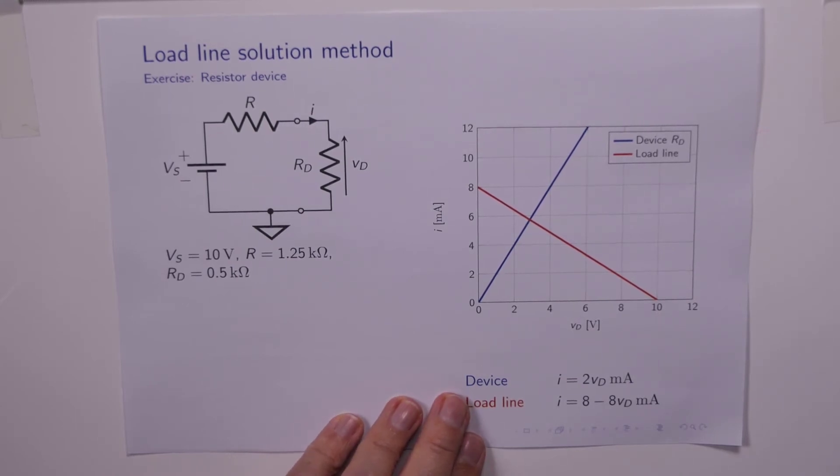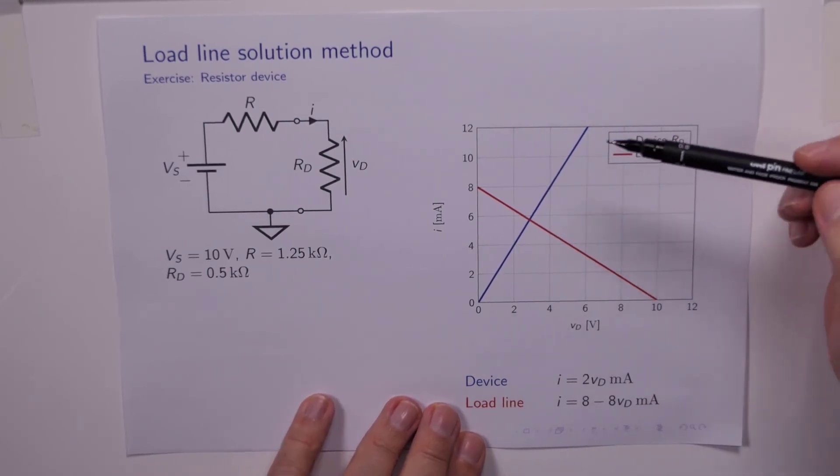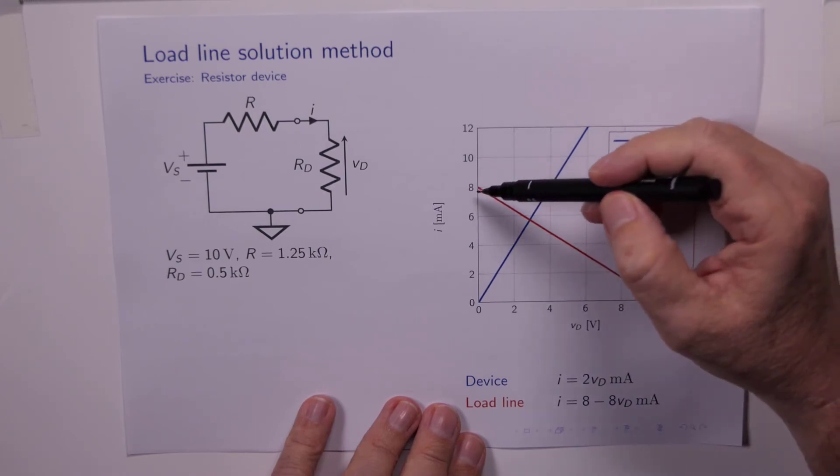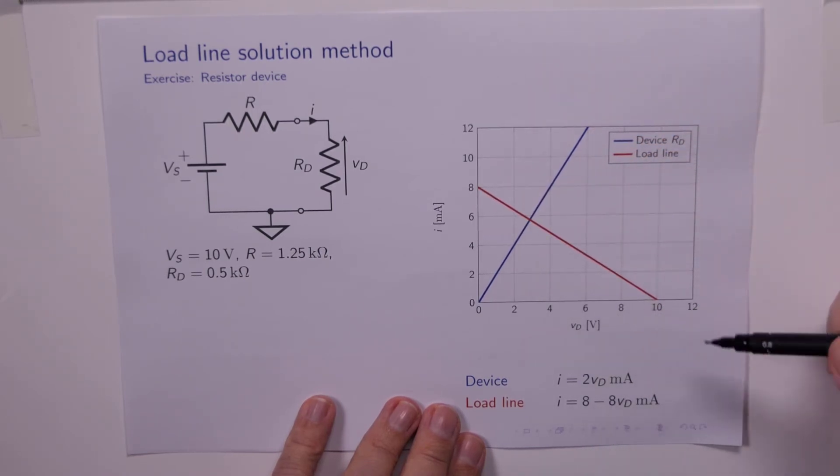So we can set up our equation for the circuit, and we can deduce the equation for the load line. In this case, 8 minus 8Vd in milliamps. We draw that line through there.